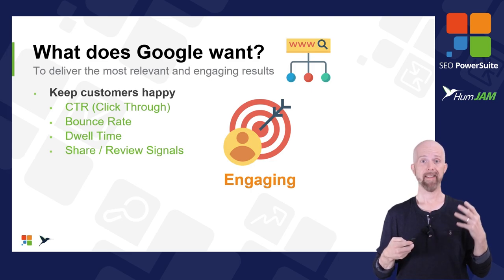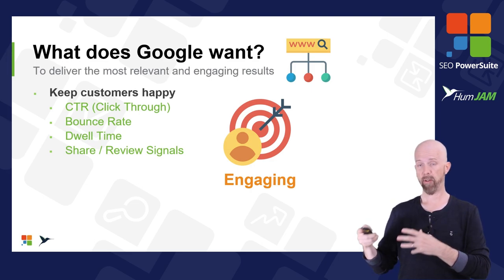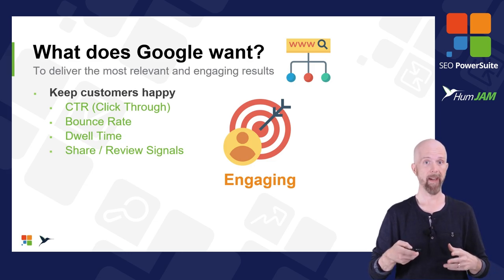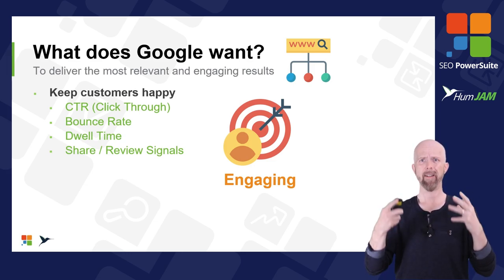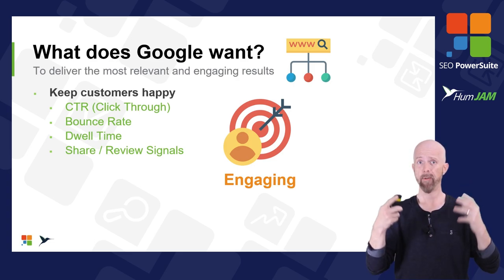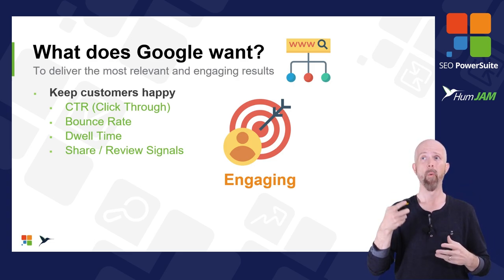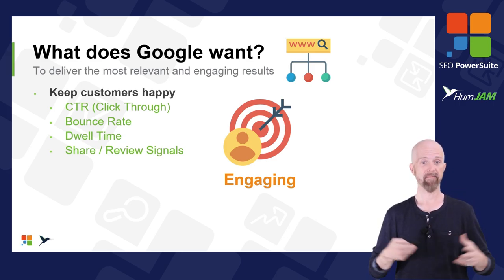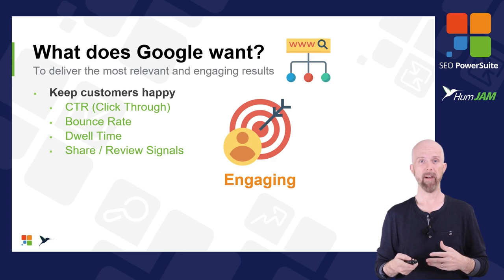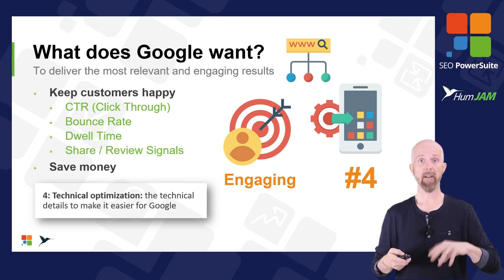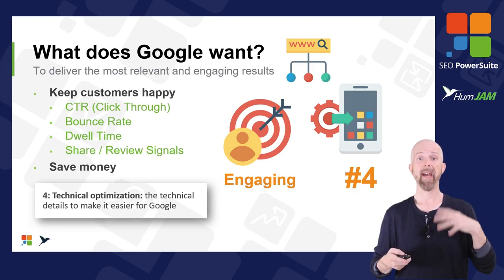Key ranking signals include: getting that click-through by making your meta description on the SERP compelling; ensuring visitors don't bounce back; making sure they stay a while because the content matches their intent; and whether they share or review it — that's how Google knows it's good content.